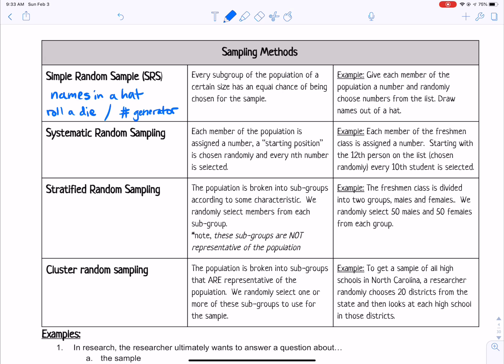Those are ways that we just gather a simple random sample. Normally you just number people off or number off the classes or groups, put them in a hat or roll a die or use a number generator to select some. So it's very simple. Hence the name.